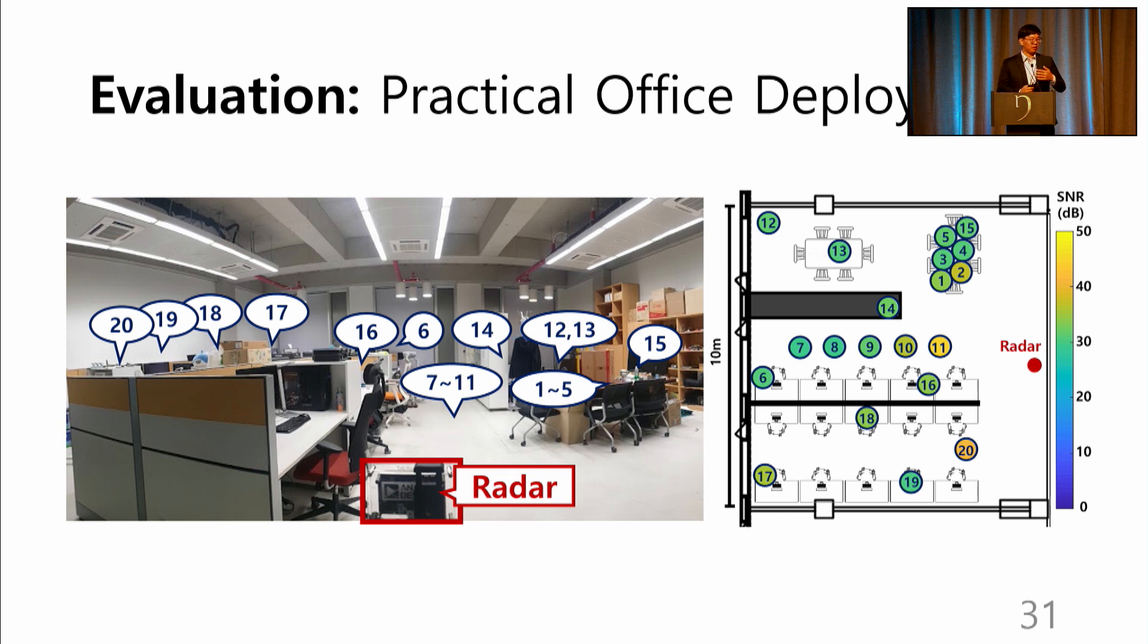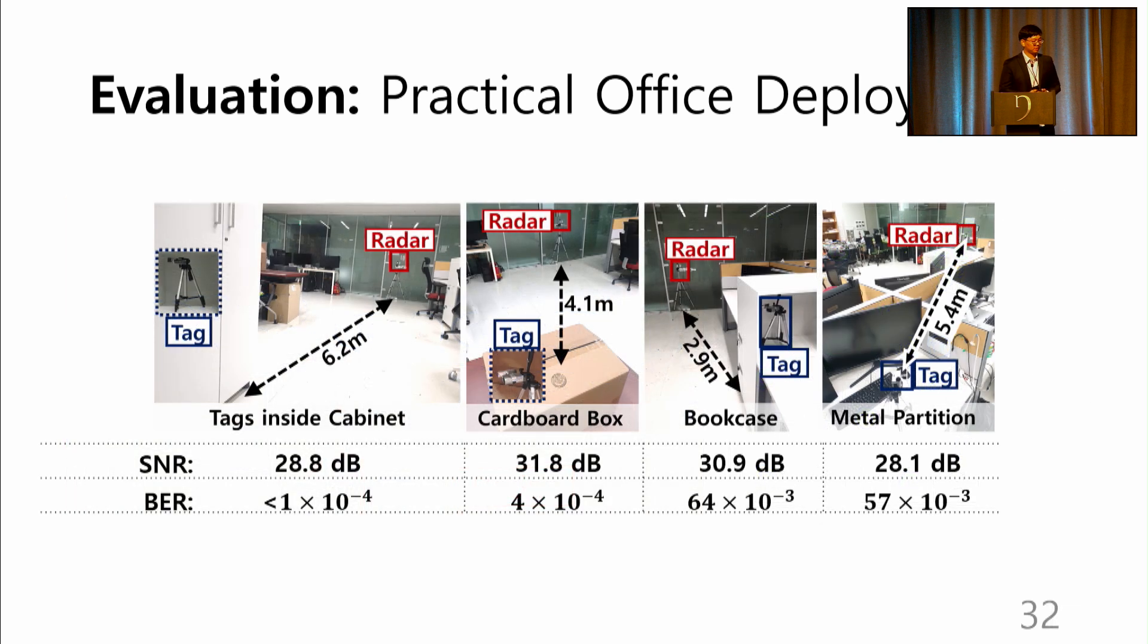To demonstrate the pervasive deployment of Omniscatter, evaluation in a practical office space of 10 meter by 10 meter was conducted. Tags are deployed throughout the office, where they communicate with an omnidirectional radar. Let's take a closer look at a few interesting deployments. A tag was placed inside a wooden cabinet with the doors closed. Another tag was enclosed in a cardboard box. Some other tags were hidden inside a bookcase or blocked by metal partitions. Regardless, each and every one of the tag signals were successfully received. The SNR stayed over 28 dB and the BER stayed below 0.07 for all the tags.